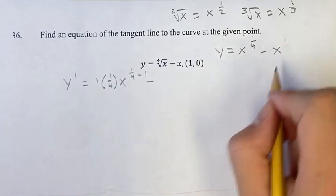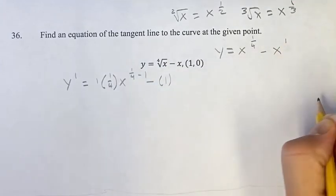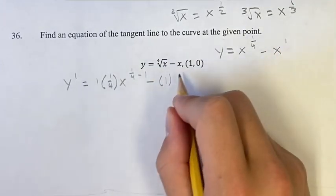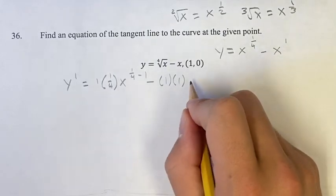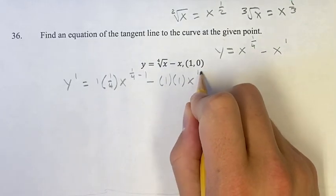Minus. Over here, our coefficient is one as well, times our exponent is one, times x to the old exponent minus one.